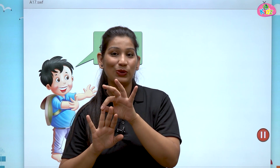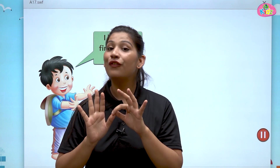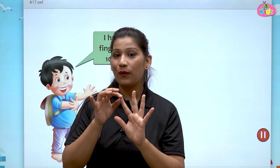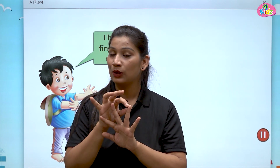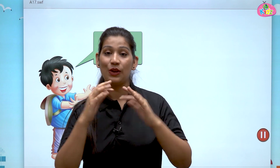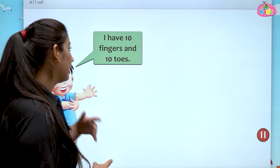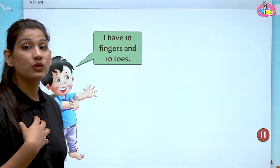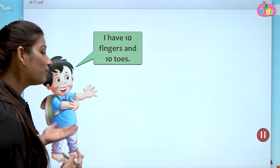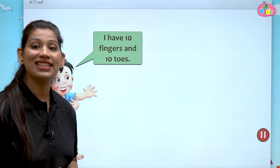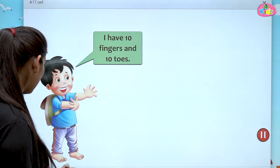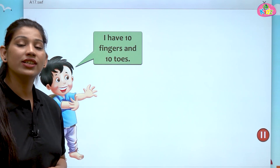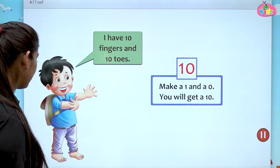Let us count the number of fingers we have: one, two, three, four, five, six, seven, eight, nine — what comes after nine? There is one more left. Yes, it's number 10! We have 10 fingers, just like this boy. We also have 10 fingers and 10 toes. 10 comes after 9.